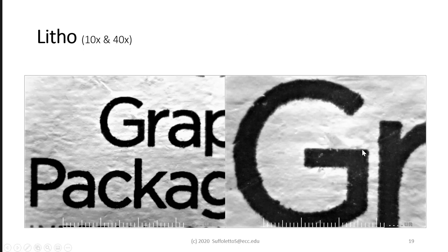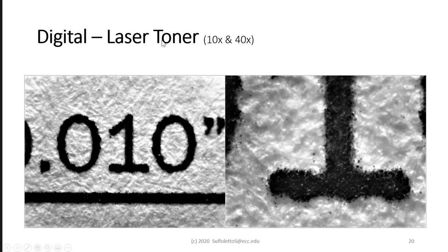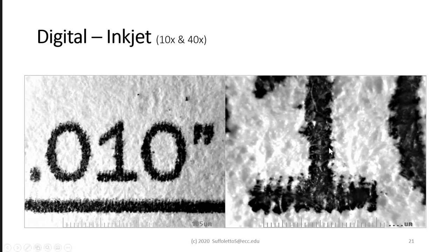In lithography, the edges are very crisp, sharp, and hard, giving offset lithography the most detail for text and halftone dots. Here's an example of digital laser toner — these are dry powder transferred by static electricity, so you may not get hard edges; you get soft, fuzzy edges. And in digital inkjet, it's like using a garden hose to spray ink onto the substrate, so again you get soft, fuzzy edges.